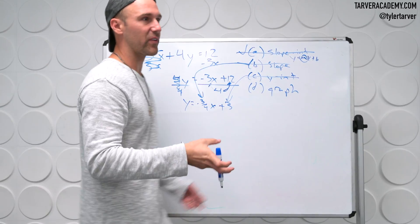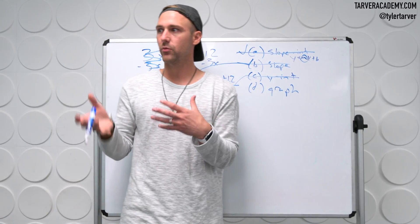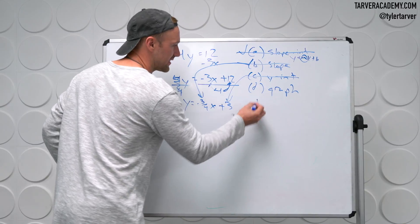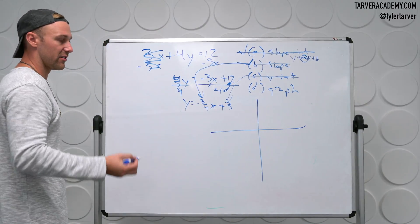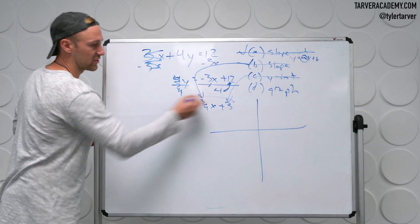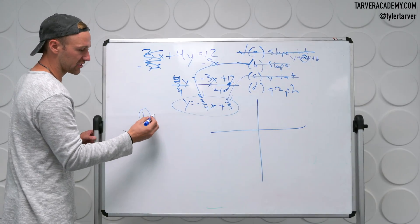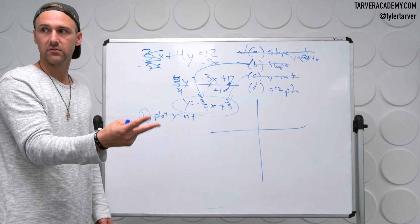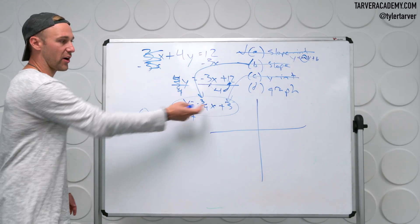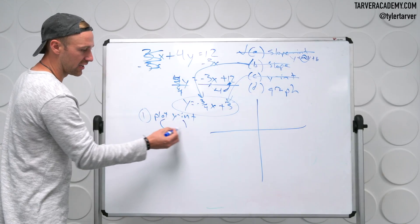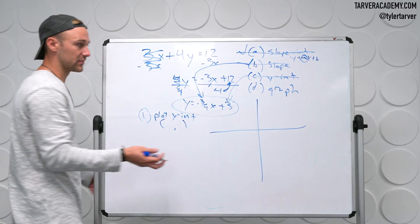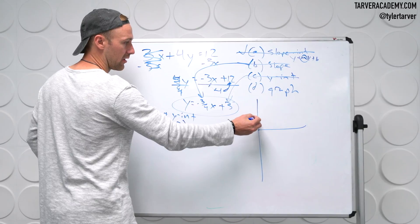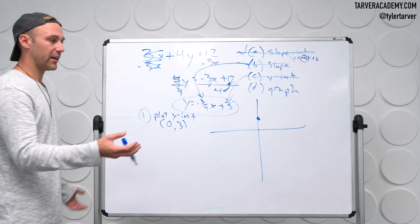The last thing to do is graph it. A lot of people can get the algebra process down, but graphing can feel more complicated than it actually is. It's pretty easy steps. Step one: plot the y-intercept. You only need two points to make a line — three is better, but two is sufficient. The y-intercept is where it crosses the y-axis. That's positive three, and x is zero, so we go over zero, up three. We're halfway there.